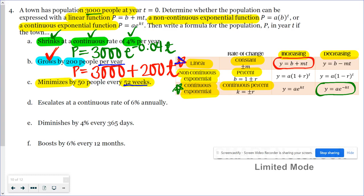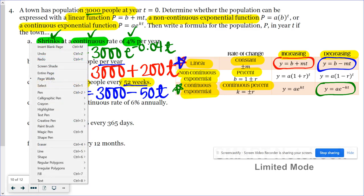What kind of function are we dealing with here? Once again, we're working with a linear function, because 50 people, that is a constant rate of change. They said it's minimizing, so that means we're looking at a decreasing linear function, y equals b minus m times t. We're using P for population. Our initial population is 3,000, and it's minimizing, so minus 50 people, and then t for that every 52 weeks, which is simply every year.